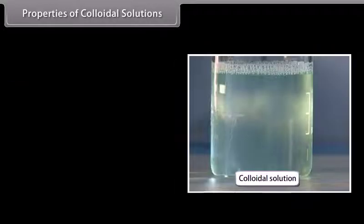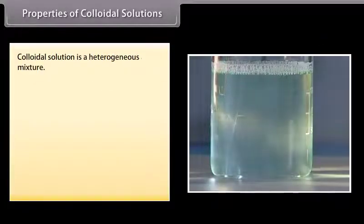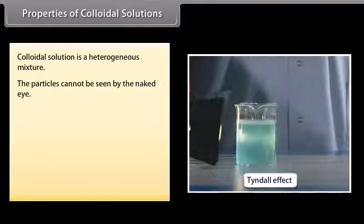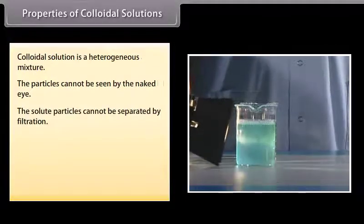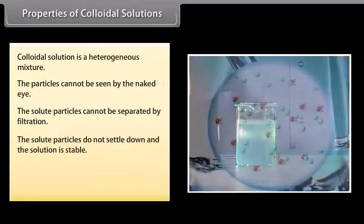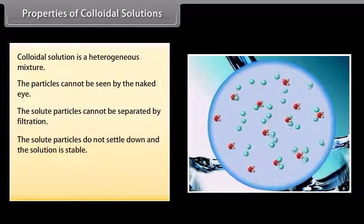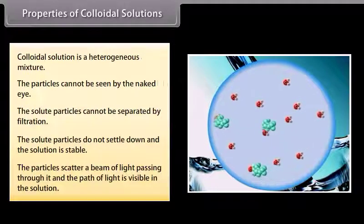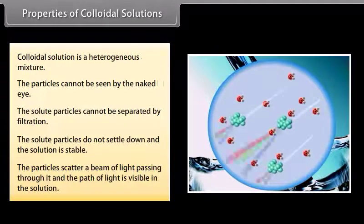Properties of colloidal solutions: A colloidal solution is a heterogeneous mixture. The particles cannot be seen by the naked eye, and the solute particles cannot be separated by filtration. The solute particles do not settle down, and the solution is stable. The particles scatter a beam of light passing through it, and the path of light is visible in the solution.